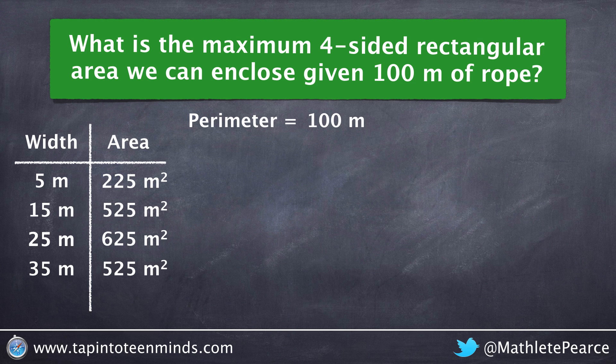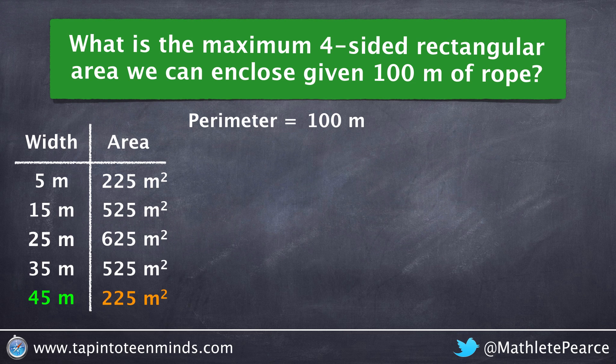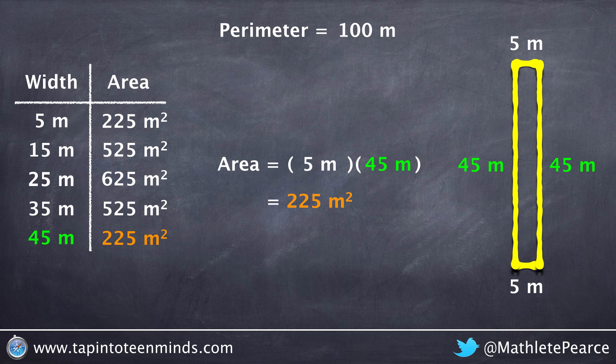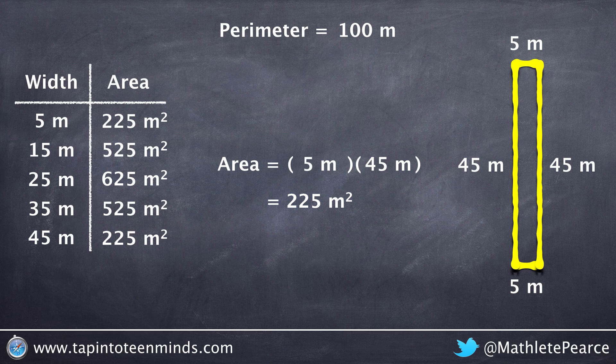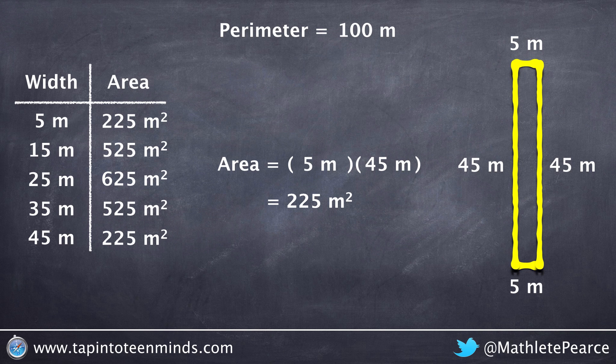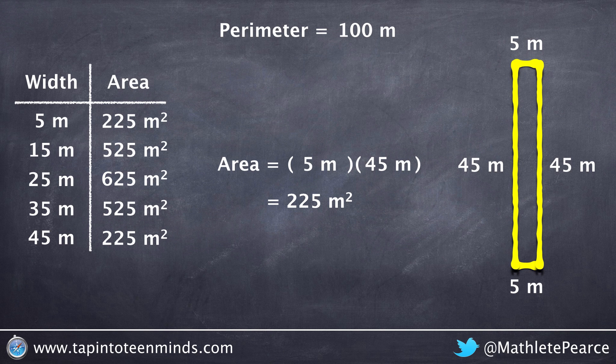If we look at the width of 45 meters, for example, that's going to leave us with only a length of 5 meters, giving us again an area that we've already seen before at 225 meters squared. And essentially, all we're doing here is taking the rectangle from being narrow horizontally to a really narrow and vertical rectangle.